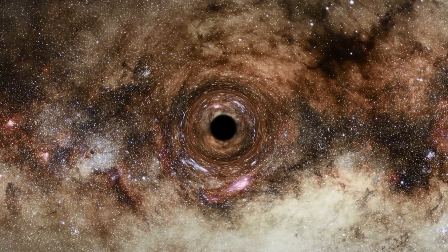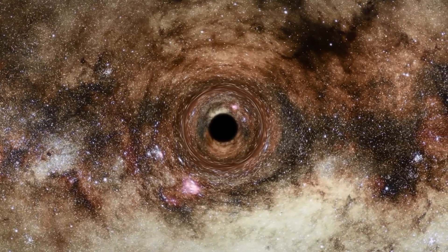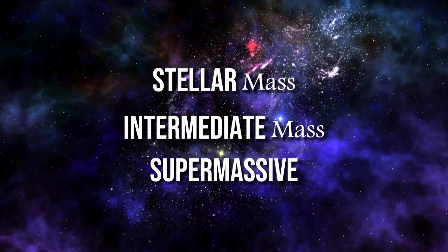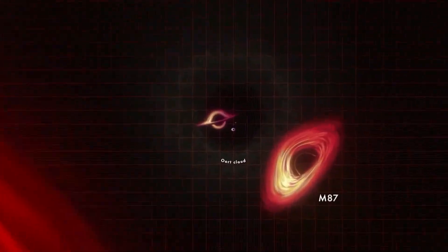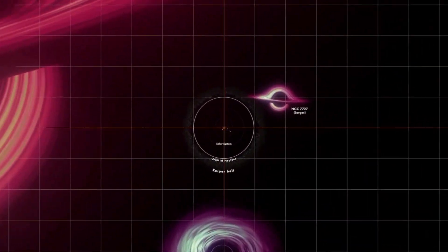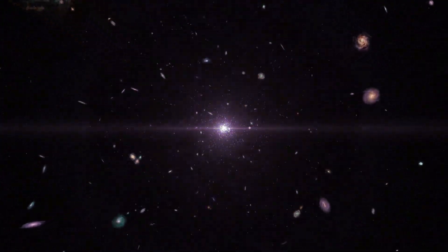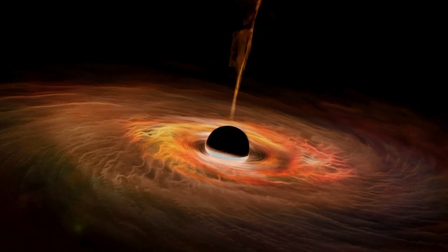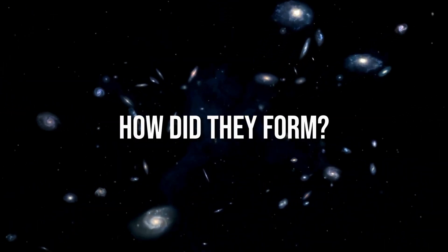Black holes are mysterious objects that have such strong gravity that nothing can escape them, not even light. Astronomers have observed three kinds of black holes: stellar mass, intermediate mass, and supermassive. These black holes are all heavier than the sun and formed after stars and galaxies did, long after the Big Bang. But there may be another kind of black hole that we have not seen yet, called primordial black holes. They are very ancient and may have formed in the first second of the universe before any stars or galaxies existed.